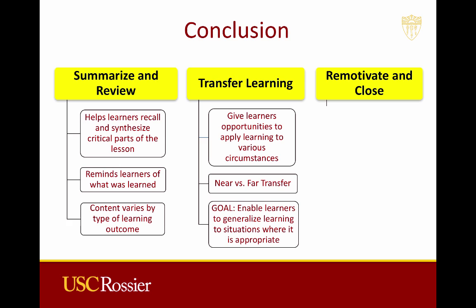During the transfer learning event, the designer can enhance transfer by giving learners opportunities to apply their learning to various circumstances. This is critical for learning concepts, principles, procedures, problem solving, cognitive strategies, psychomotor skills, and attitudes. The goal of this event is to enable learners to generalize new learning to situations where it is appropriate, and it encourages learners to create rules of thumb to determine when new learning is appropriate. Transfer does not happen automatically, and learners may need to be prompted to see the connections between prior learning and the new situation.